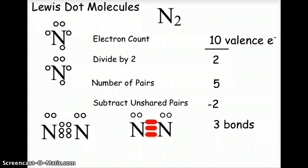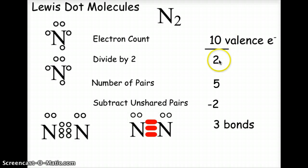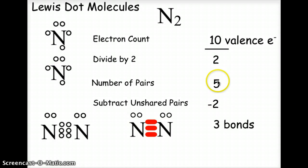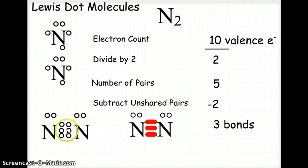When we go to nitrogen, N2, we have two nitrogen atoms with five valence electrons each, giving a total of ten valence electrons. Dividing by two, we need five pairs. Each nitrogen has one unshared pair, so that's two unshared pairs total. Five minus two tells us we will need three bonds to hold nitrogen in its N2 diatomic form. The six valence electrons being shared between the two nitrogens are represented by three lines — this is the Lewis dot structure for N2, diatomic nitrogen.